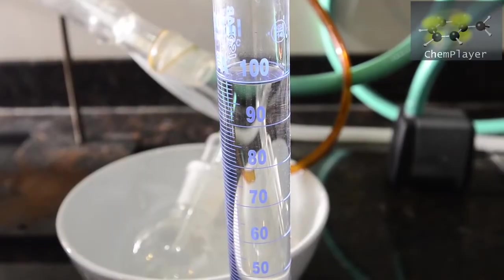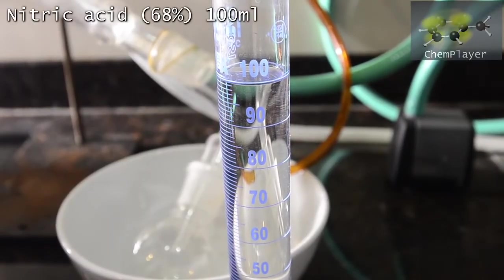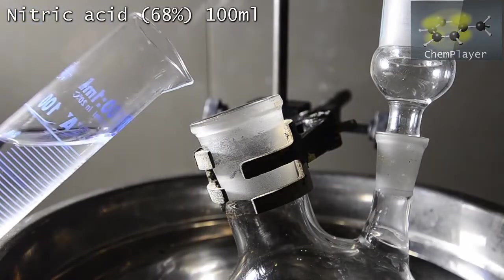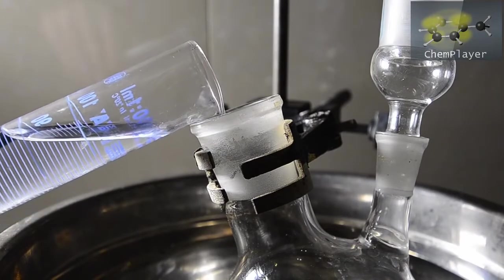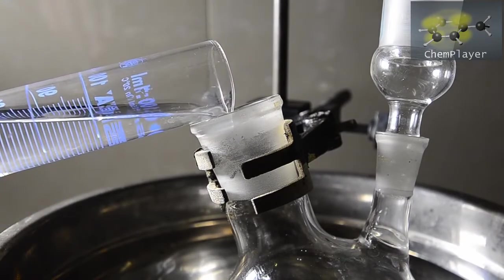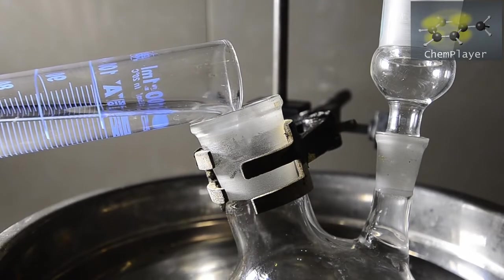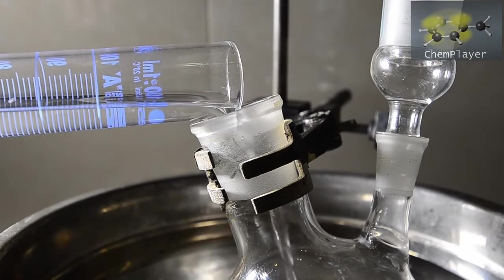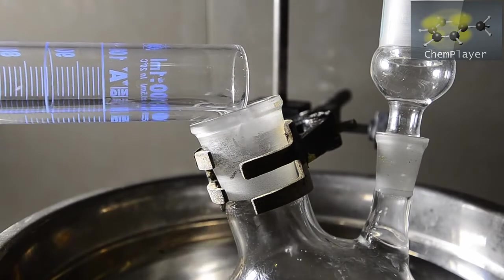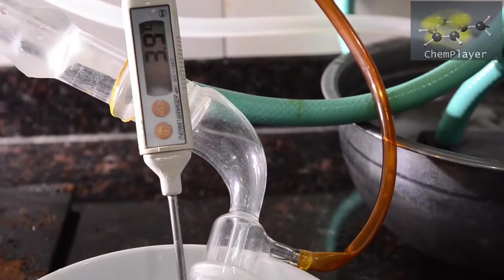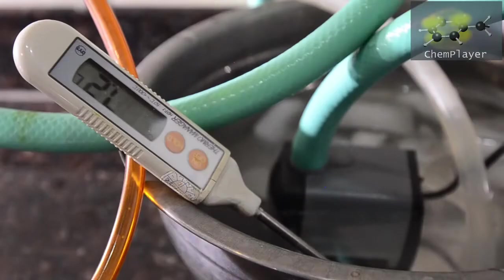Here's our large scale acid. 100 mils of 68% concentrated nitric acid. Let's get this into the flask. And now we're just waiting for the temperature in our ice baths to drop nicely and level out.